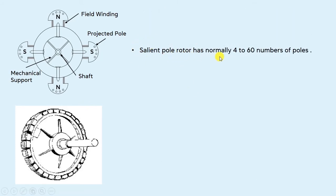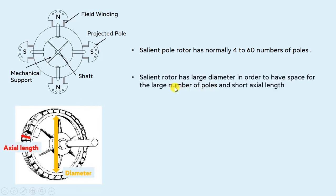Salient type rotor normally has 4 to 60 number of poles, so they have a large number of poles. The salient rotor also has a large diameter in order to have space for the large number of poles, and a short axial length. As you can see in the cross-sectional view of the salient type rotor, it has a large diameter and short axial length.